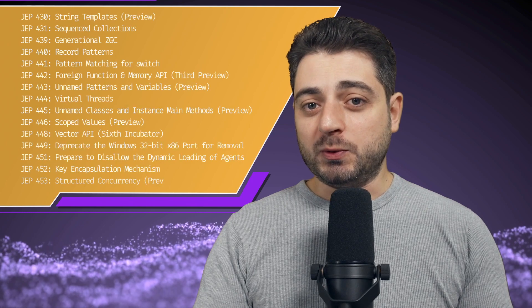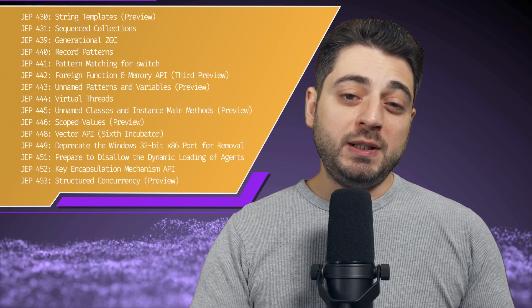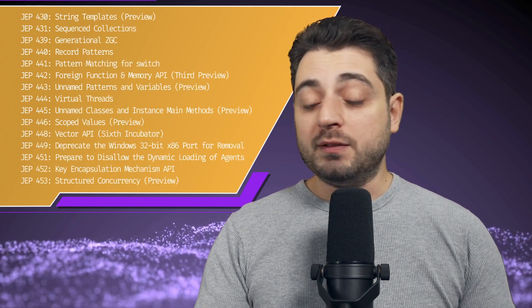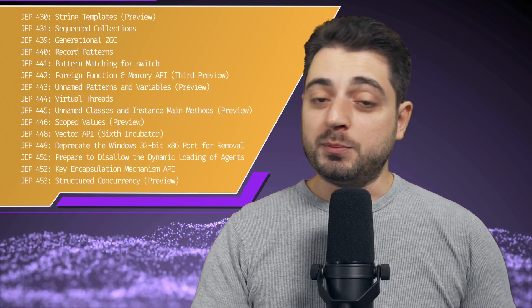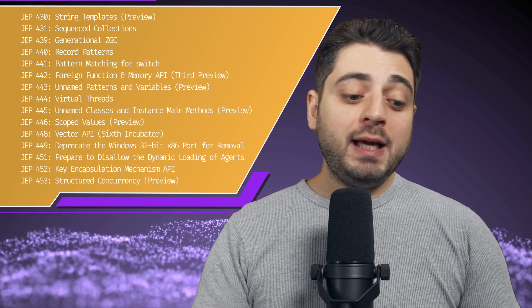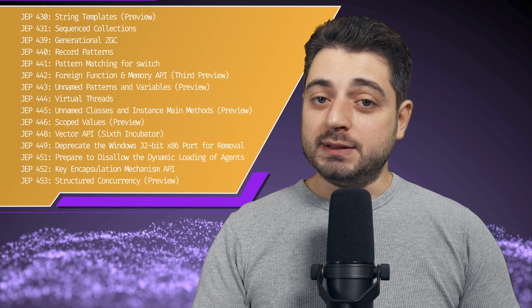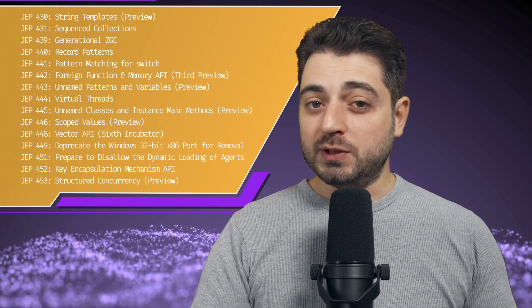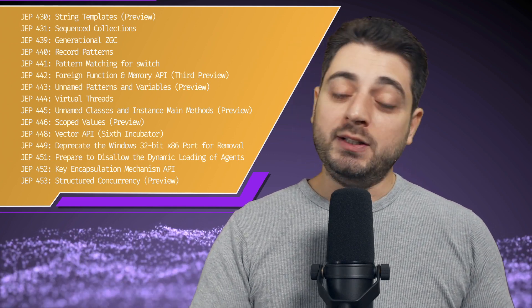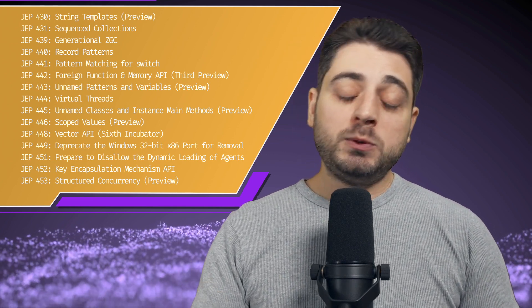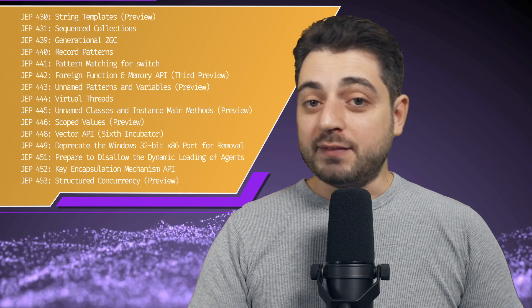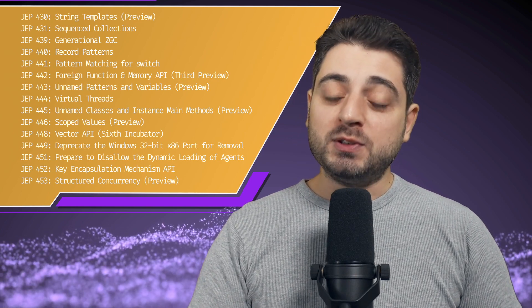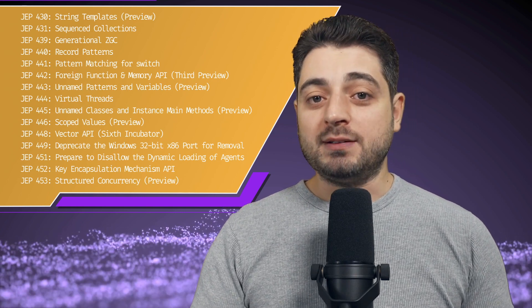There are 15 features in total. Some of them are previews, some of them are relevant only for the Java programming language and some of them are stable. Most notably the project Loom, aka virtual threads, aka green threads, which we will talk about right after the message from our sponsors scalajobs.com and rustjobs.dev.